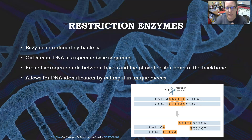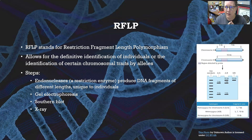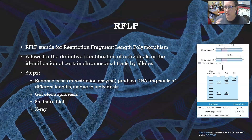Restriction enzymes also allow for DNA identification of humans, because they cut the human DNA into unique pieces for each individual. This is where you get RFLP — Restriction Fragment Length Polymorphism — which allows for the definitive identification of individuals or the identification of certain chromosomal traits by alleles. The steps in RFLP involve incubating with endonucleases, which are restriction enzymes, to produce DNA fragments of different lengths that are unique to individuals or specific to the gene being looked for.